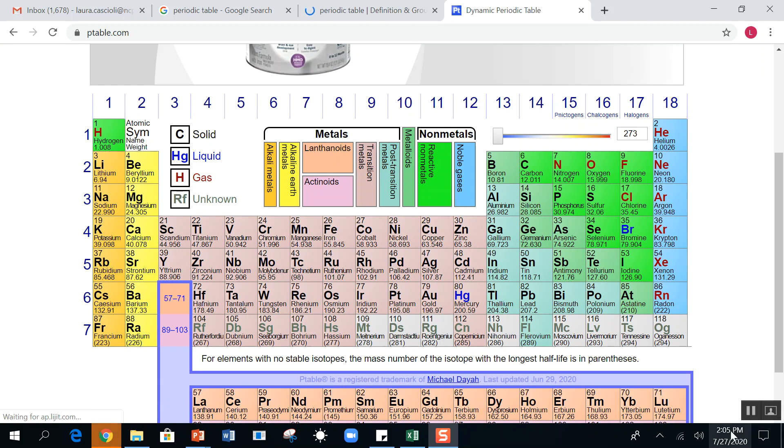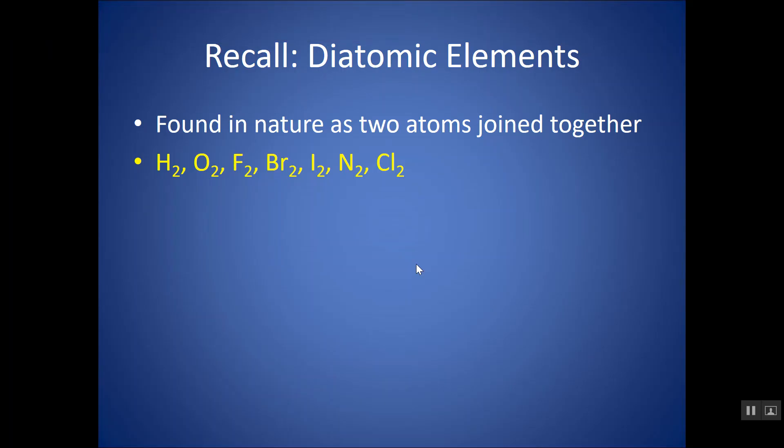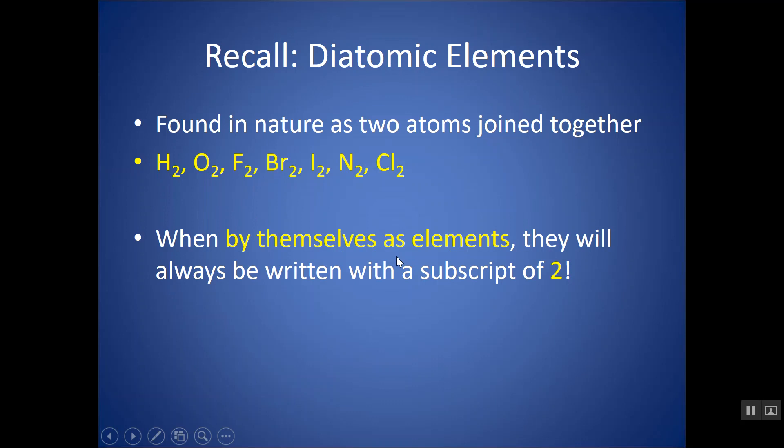So you can remember it either as Hofbrincl or remember it visually, but those seven elements, H-O-F-B-R-I-N-C-L, are diatomic by themselves, meaning if you find them as single elements in nature, they are two atoms joined together. Why is this important? Because if we're writing a chemical reaction, and we're writing these elements by themselves, they're always going to be found with a subscript of 2.